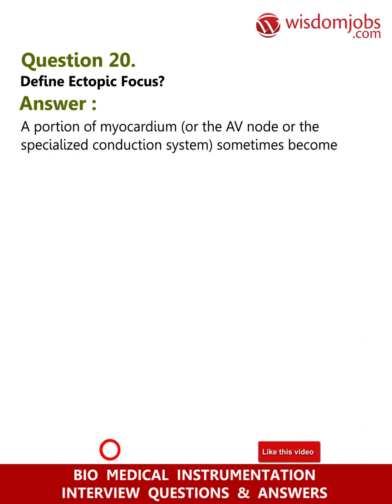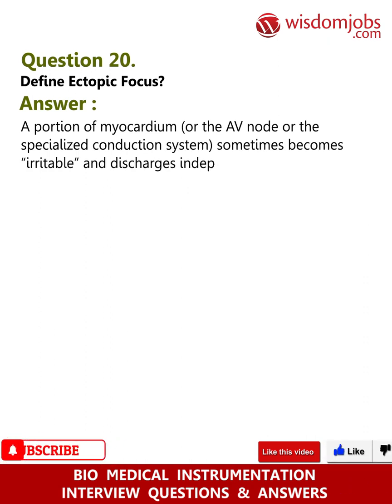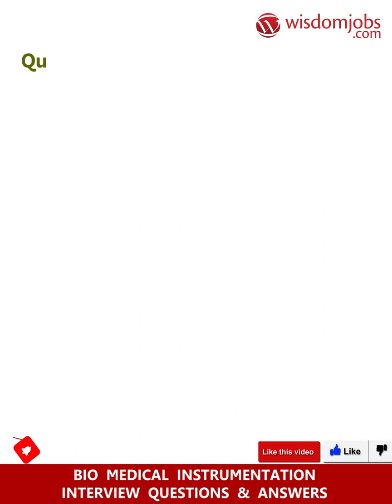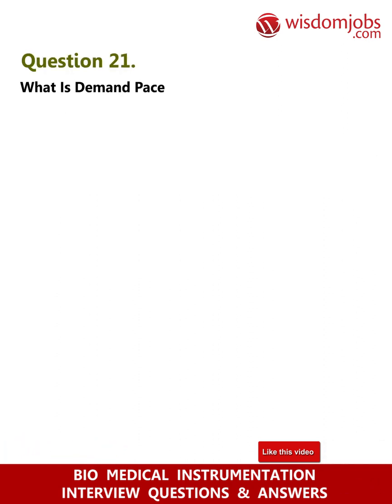Question 20: Define ectopic focus. Answer: A portion of myocardium, or the AV node, or the specialized conduction system sometimes becomes irritable and discharges independently. This site is called ectopic focus.